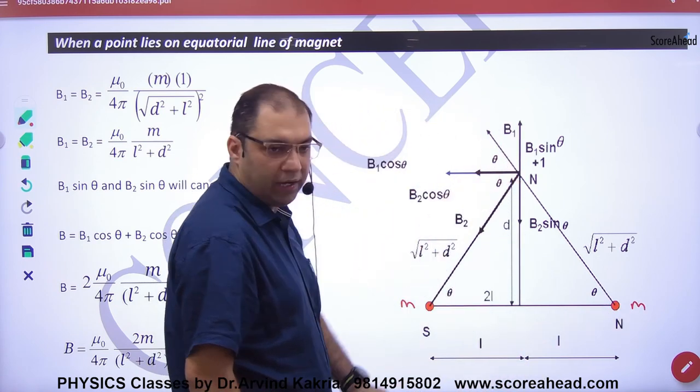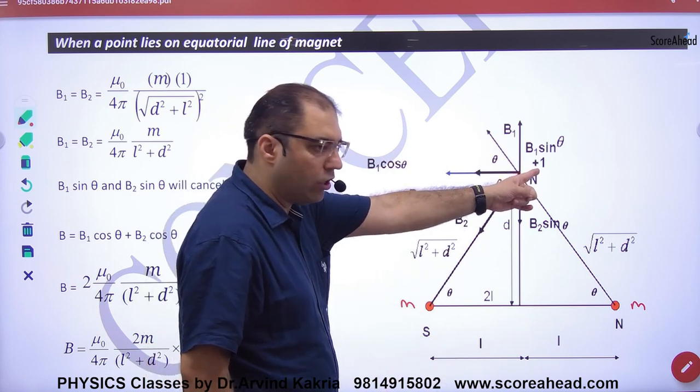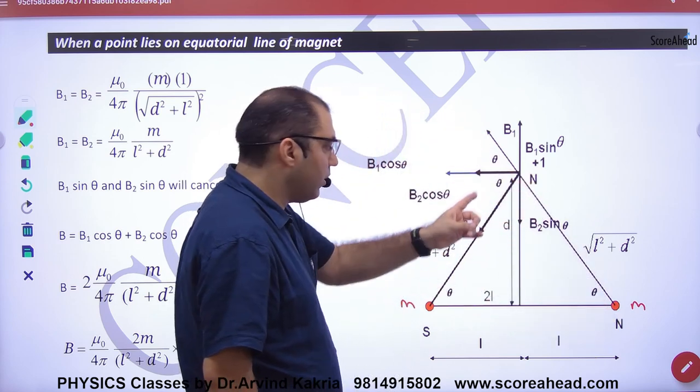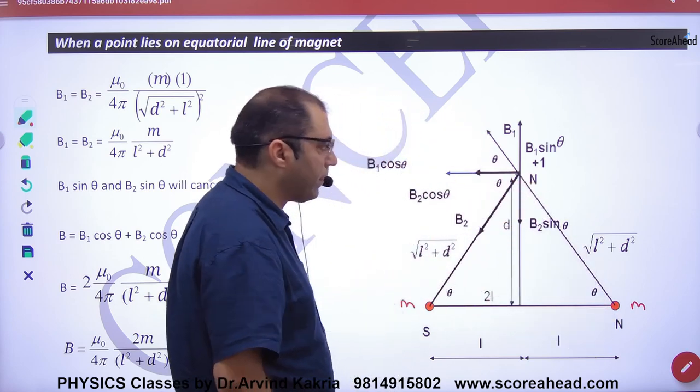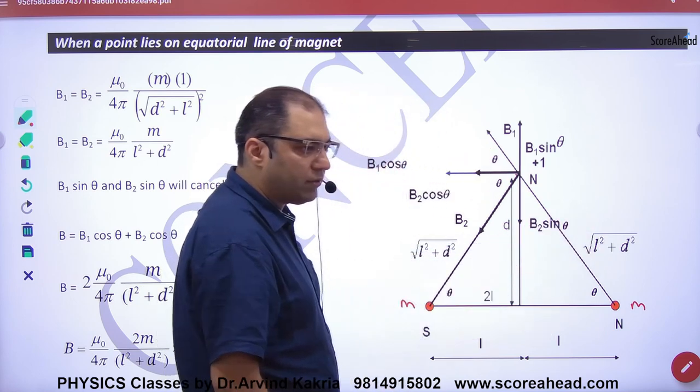You have to find the field at distance d. Wherever you want to find it, there is pole strength 1, and the imaginary pole is north. North will repel north. South will attract north. If this is d and this is L, then the distance is under root of L square plus d square.